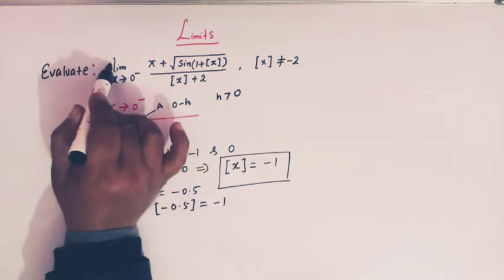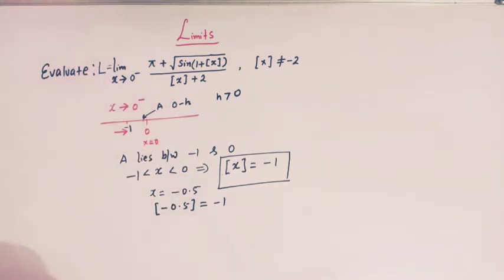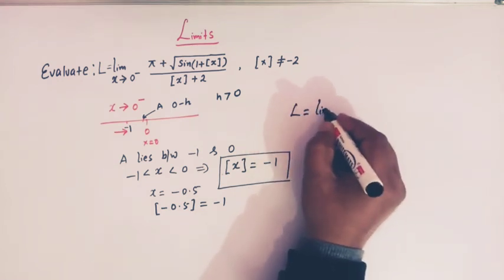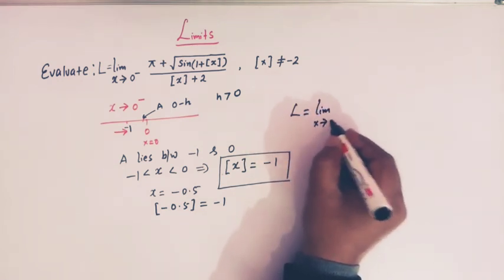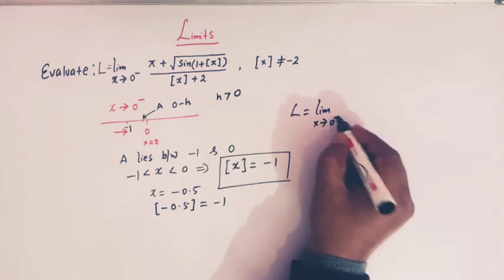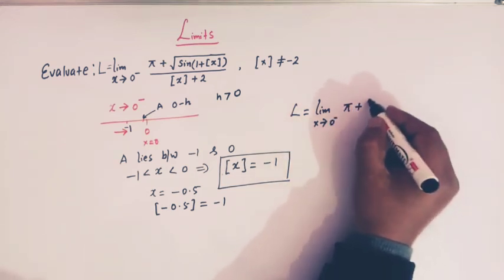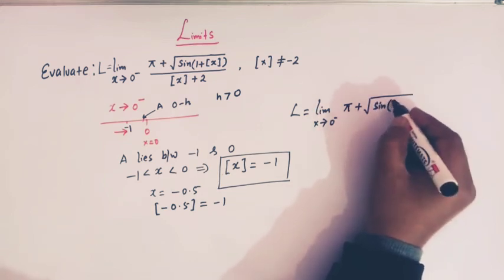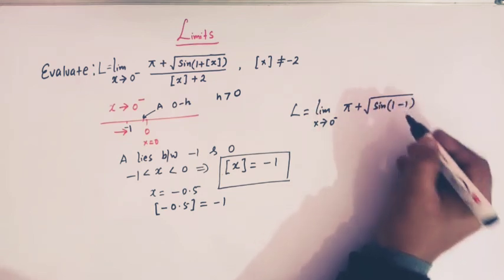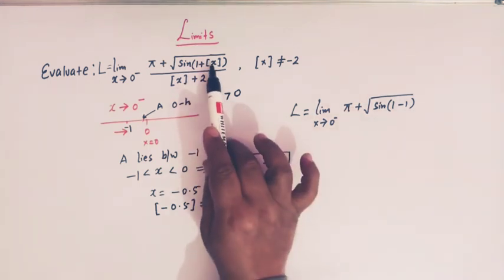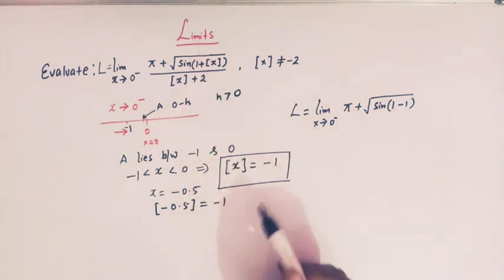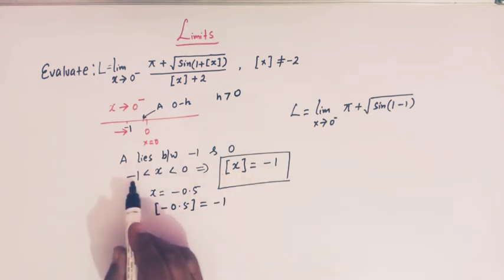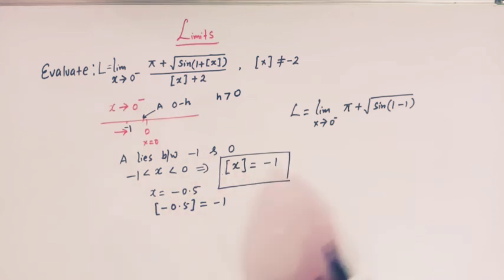Let us denote this limit by L. L can be written as: limit as x tends to 0 minus of pi plus square root of sin of (1 plus (minus 1)), because the value of greatest integer of x equals minus 1 when x lies between minus 1 and 0. In the denominator we can write minus 1 plus 2.